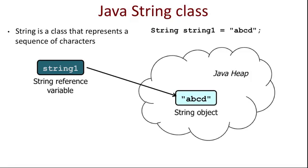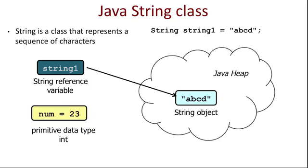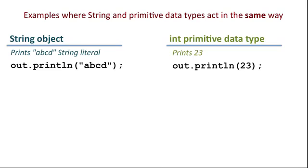The variable string1 points to or references the string object ABCD. This is different from the primitive data type int. In the memory location referenced by the variable num, we will actually find the representation of the number 23 in binary. In the memory location referenced by the variable string1, we find a reference to yet another location in memory where the string ABCD is actually stored. But there are still some similarities between objects and primitive data types.